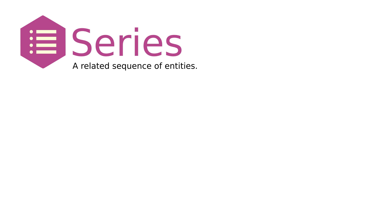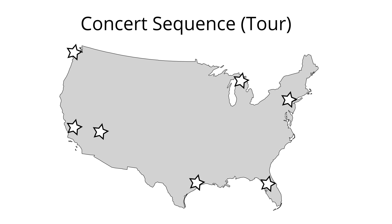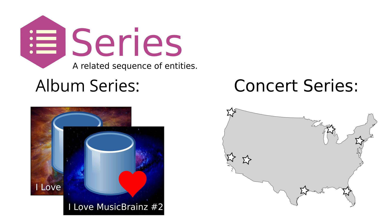The final way we can organize everything we've learned is in the series. Sometimes releases, works, or events are all part of some kind of related sequence. For example, albums might be part of a series — like if I made 'I Love Music Databases' parts two and three. Multiple concerts might compose a tour, and so on. To track this sequence, we can put them together in a series.